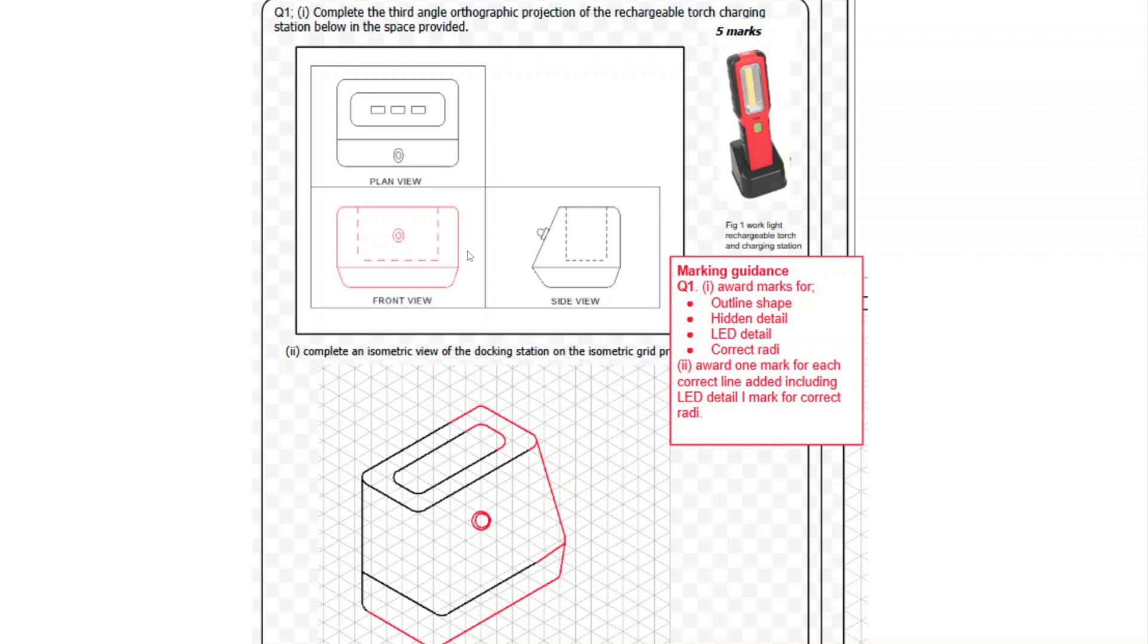So really on both, you're going to pick up a mark for the outline shape, getting that correct. You're going to pick up one mark for adding the hidden detail, one mark for adding the LED detail, and one mark for correct radii. And really, that's the second part of the question, again, is getting the radii correct, getting the lines, really a mark for each line, a mark for the LED. So one, two, three, four, five marks. So that's the mark scheme, quite simple.